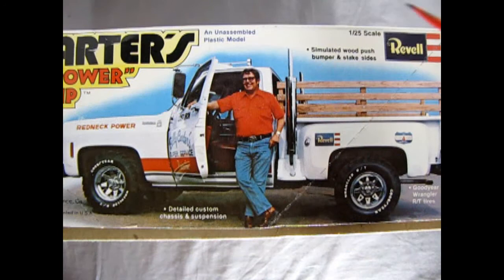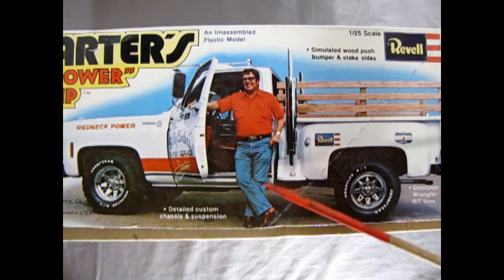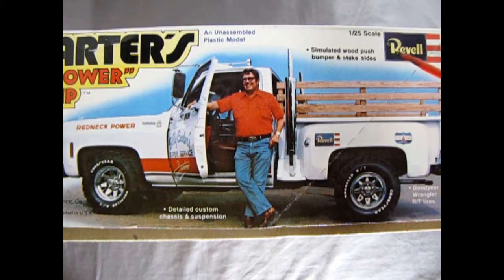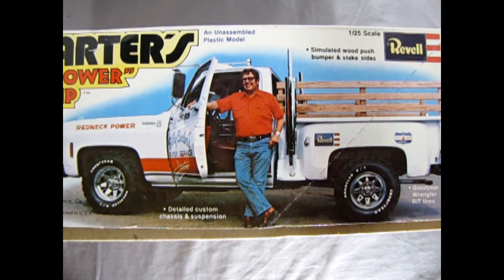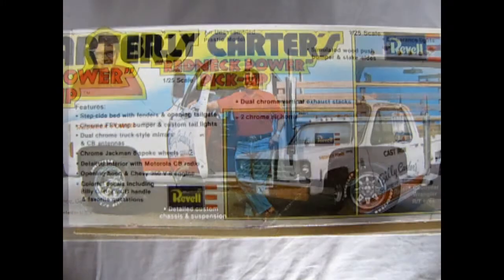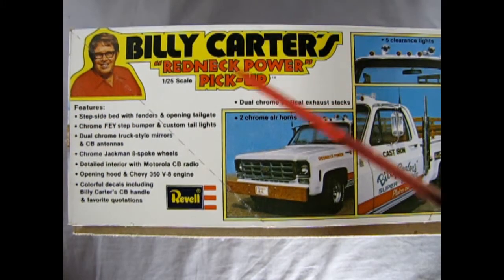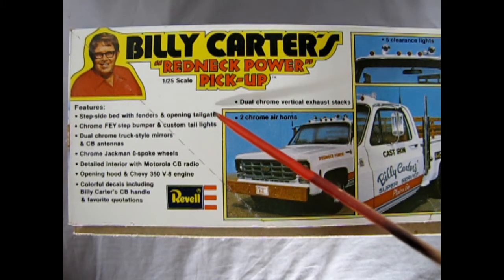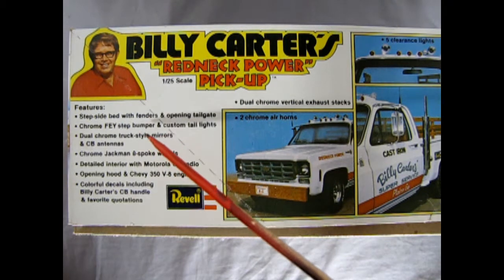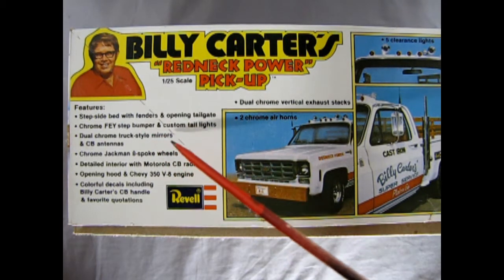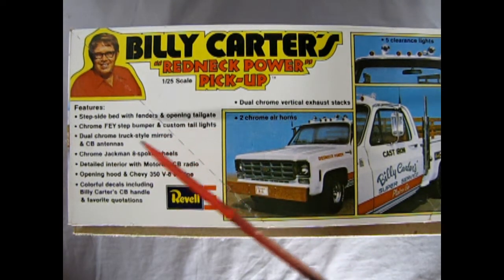This is an unassembled plastic model kit which includes a detailed custom chassis and suspension, simulated wood push bumpers and stake sides, and Goodyear Wrangler RT tires. Along with the mentioned features, we also have a step side bed with fenders and opening tailgate, chromed Baja step bumper and custom taillights.